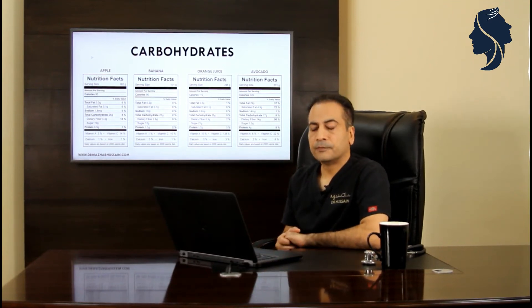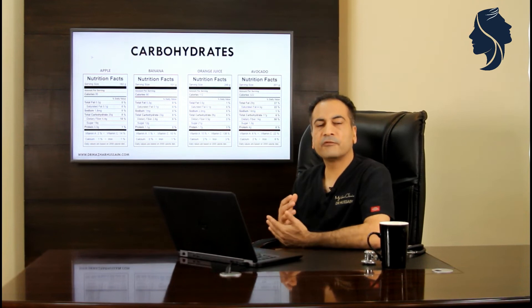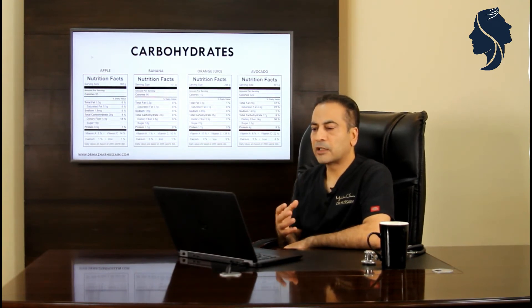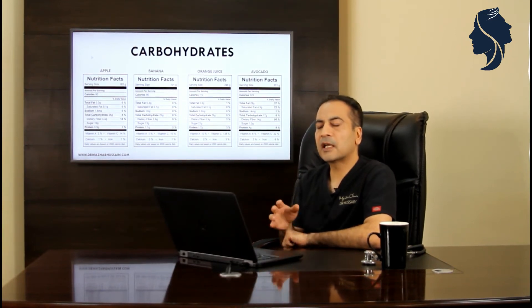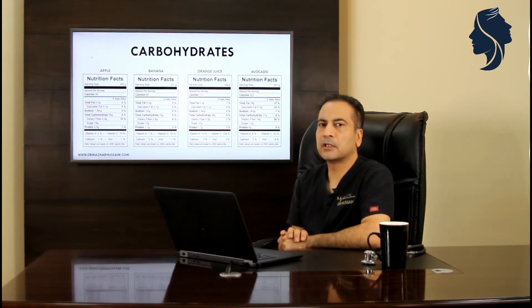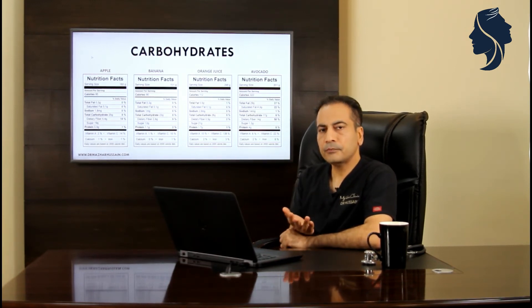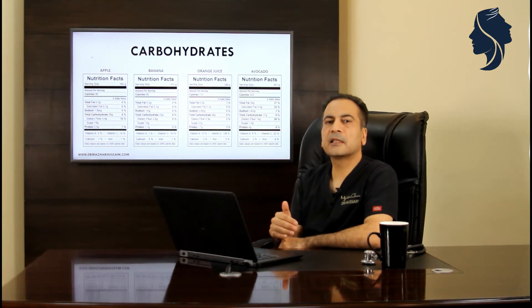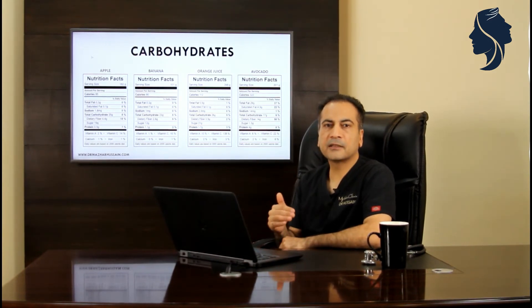Compare this to an avocado. It contains 17 grams of carbohydrates but 14 grams of dietary fibers, so the net carb is only three grams — just half a teaspoon of sugar. It also contains a great amount of fat. It's quite obvious that having an avocado is going to spike your blood glucose far less than having an apple, banana, or orange juice. And if you spike your insulin level less, you'll have less insulin secretion.